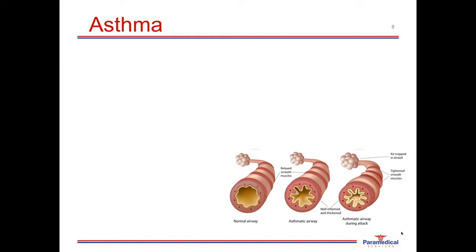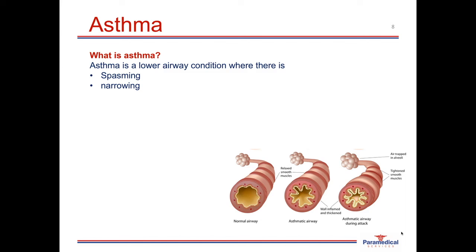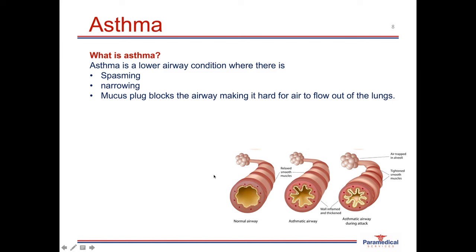Asthma is a very common medical condition that can occur in infants, children, and adults. It is a lower airway condition where there is spasming and narrowing of the airways and a mucus plug that blocks air from going in and out of the lungs. Looking at the diagram, a normal airway allows air to pass freely to the tiny air sacs, whereas during an asthma attack there is narrowing, thickening of the wall, spasming, and mucus plugging, making it very difficult for air to reach those air sacs.